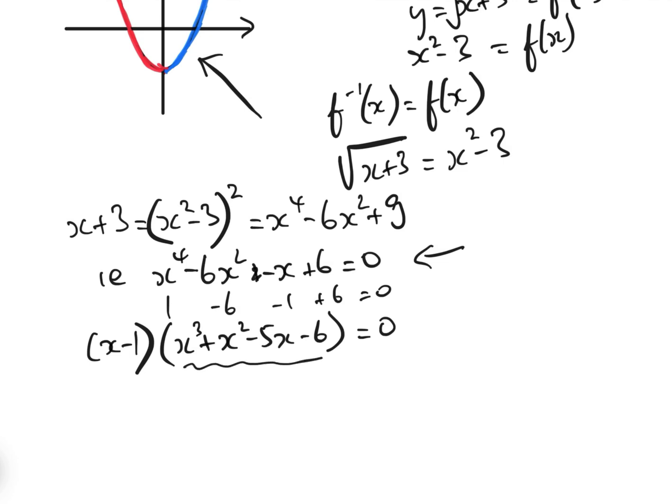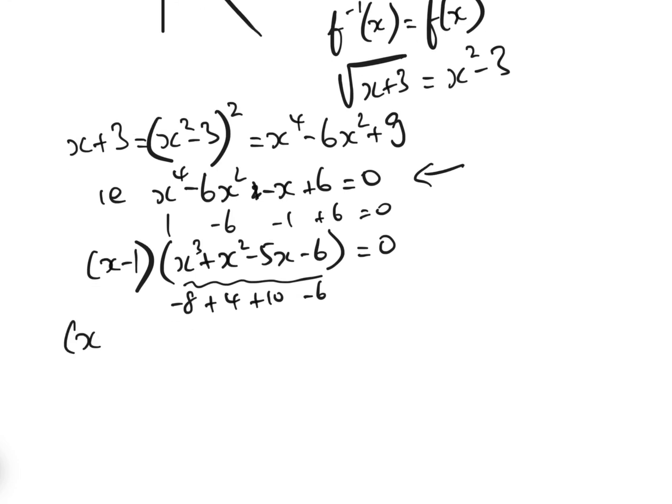And fortunately, again, if we look at this minus 2, we can see that's minus 8, add 4, add 10, minus 6. So we also know that minus 2 is a solution, so we can take that out as a factor as well. And that gives us x minus 1, x plus 2, and when we factorise that, that gives us x squared, minus x, minus 3, equals 0.